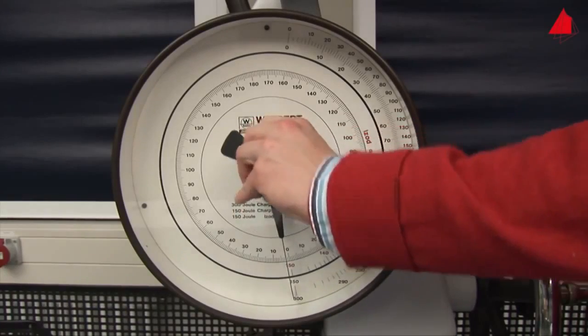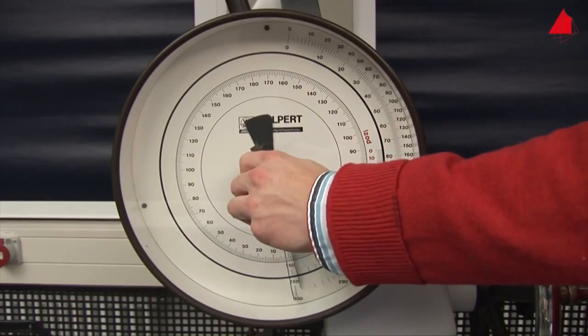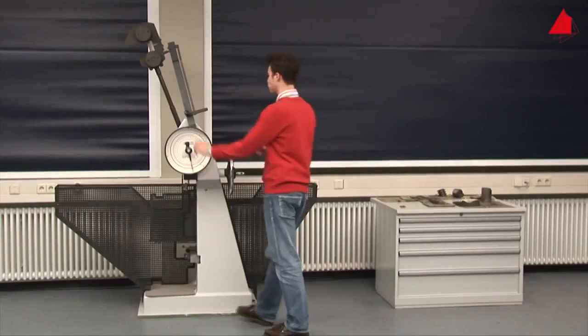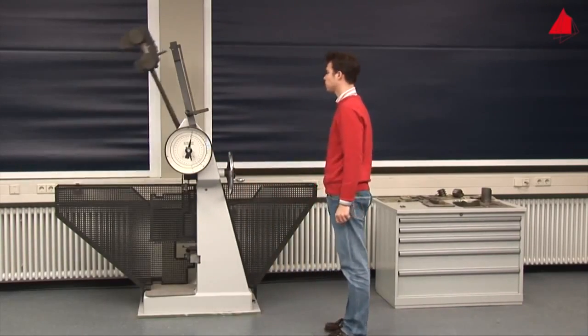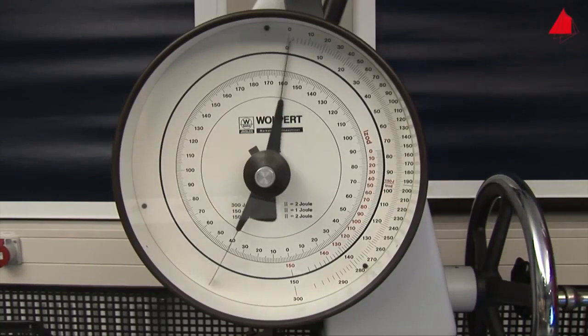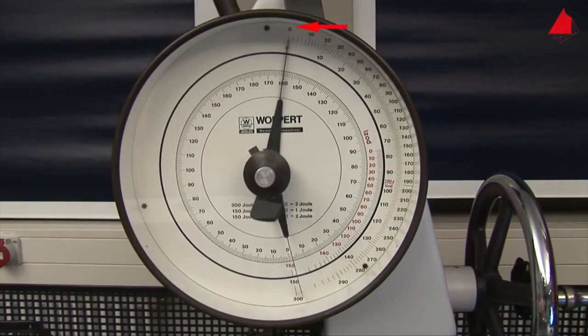In order to do this he turns the drag indicator downwards and releases the pendulum without a test specimen. The drag indicator stops at position zero. This proves that the pendulum has the correct starting position and that the friction is correctly compensated. The machine is ready for the tests.